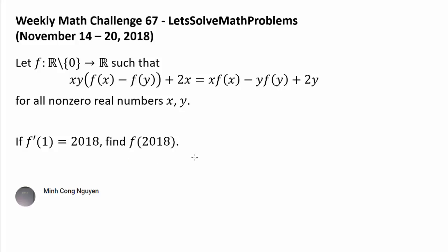This is one of those problems where there are many different elegant ways of proceeding. When given a functional equation, one of the first things we try is to experiment by plugging in some values for x or y to see if that simplifies anything — extracting quick information with well-chosen substitutions. In this case, one substitution that stands out is y = 1.